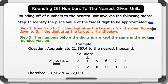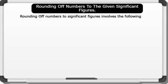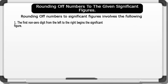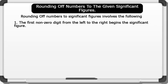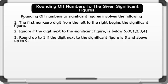That's brilliant. Now let's look at rounding off numbers to the given significant figures. Rounding off numbers to significant figures involves the following steps: 1. The first non-zero digit from the left to the right begins the significant figure. 2. Ignore if the digit next to the significant figure is below 5, that is, 0, 1, 2, 3, and 4. 3. Round up to 1 if the digit next to the significant figure is 5 and above, up to 9.